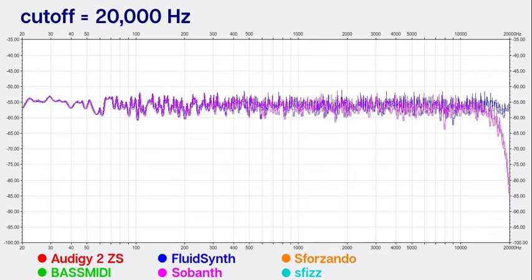It's possible that the high frequency roll-off behavior of Sforzando and SoBanth might change at different sampling rates. I took these measurements at 48 kHz. However, if you were to record at 96 kHz, for example, it's possible that this roll-off might not happen if the roll-off is a consequence of trying to avoid getting too close to the Nyquist frequency. But I have not tested that yet.